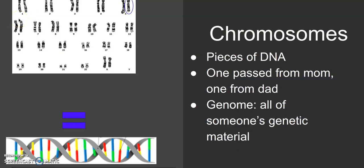The majority of people — and we'll talk about what it means not to — have 46 chromosomes, split into two pairs. Most people have 22 sets of somatic chromosomes, that is chromosomes that are not sex-determining, and one set of sex chromosomes. In karyotypes, chromosomes are organized from largest to smallest, which is why you see them in this orientation.